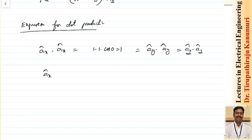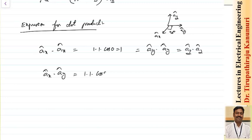If I am doing the dot product of unit vector x with unit vector y, the angle between them is 90 degrees, so this becomes cos 90 = 0. Similarly, the dot product of any unit vector with another perpendicular unit vector — Ay dot Az, Az dot Ax, or their interchanges using the commutative law — always becomes 0.